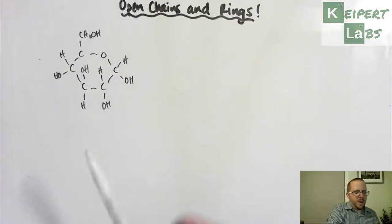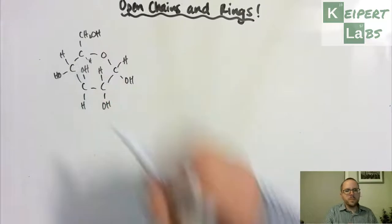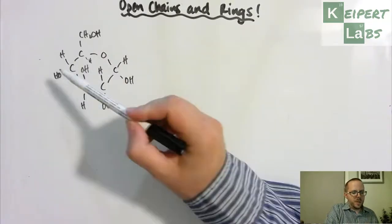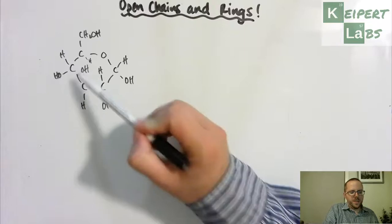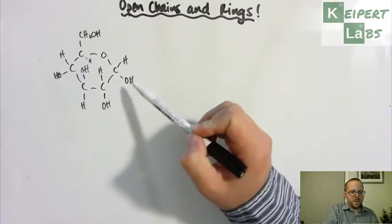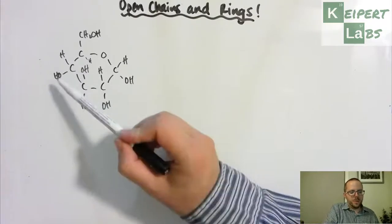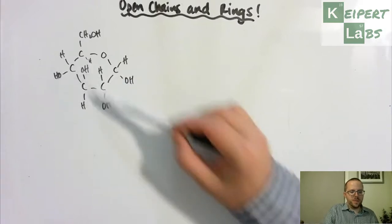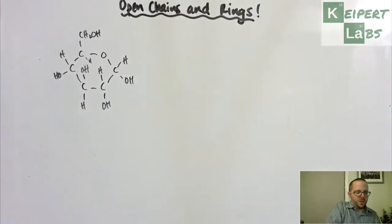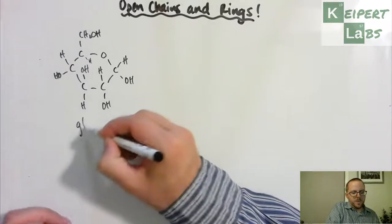I like to think about it in terms of the OH groups being down, up, down, down in this kind of arrangement. Or if you want to think that both of these are pointing down and then these two are flipped. So this is glucose, just to remind you.